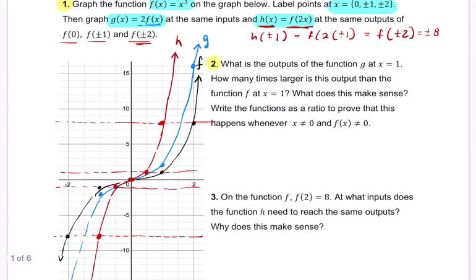What are the outputs of the function g at x equals 1? All right. So we're just evaluating g at 1. So g of 1 is twice f of 1, which is twice of 1 cubed, which is 2 times 1, or 2. So the point 1, g of 1 equals 2.